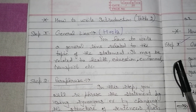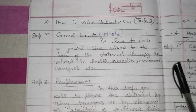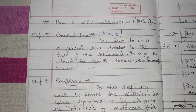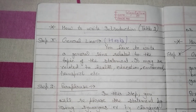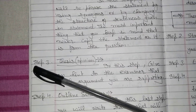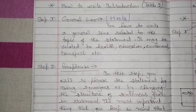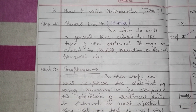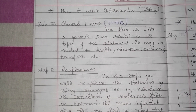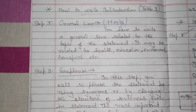Let's first discuss how to write the introduction for Task 2. In the introduction, there are four steps: step one is the general line, step two is paraphrase, step three is thesis, and step four is outline sentences. The general line is also known as the hook — it is the opening part of the essay. But in IELTS it is not compulsory.